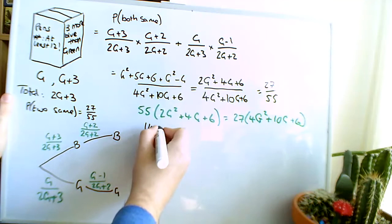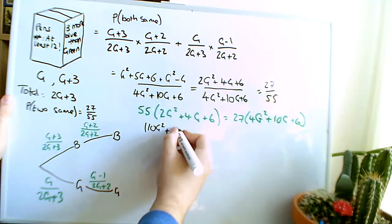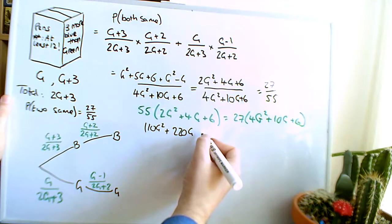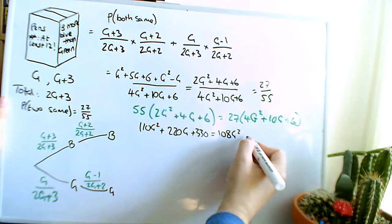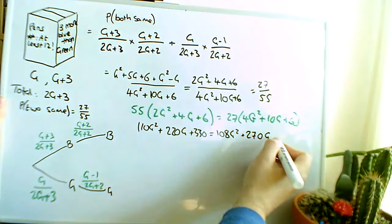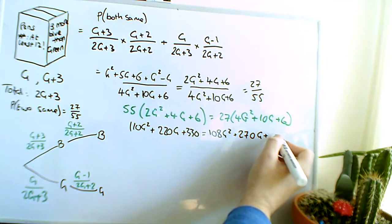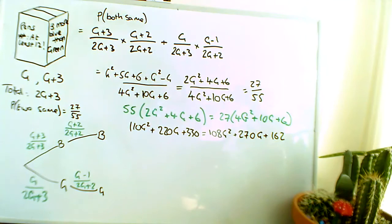So expanding all of this, you've got 55 times 2, which is 110 G squared plus 55 times 4, that's going to be 220 G plus 330 equals 108 G squared, 27 times 10 is 270 G plus 27 times 6, so 120 plus 42, so that's going to be 162.